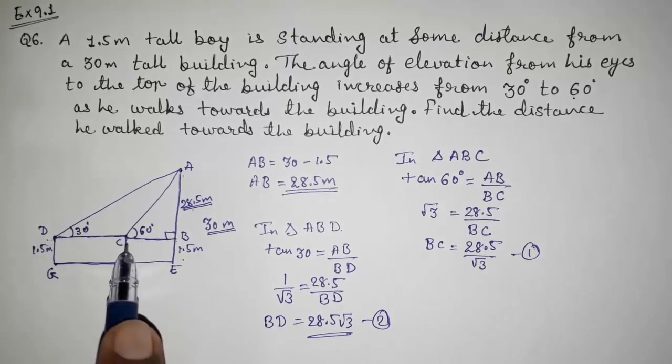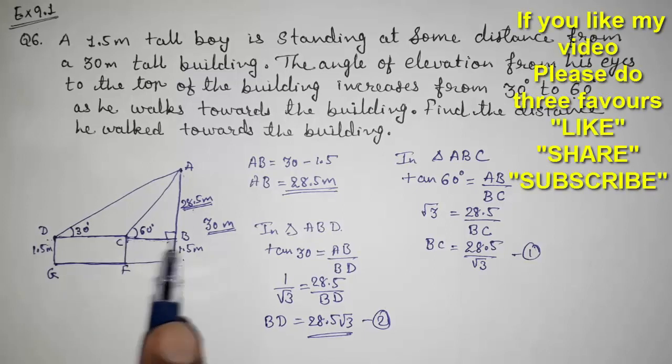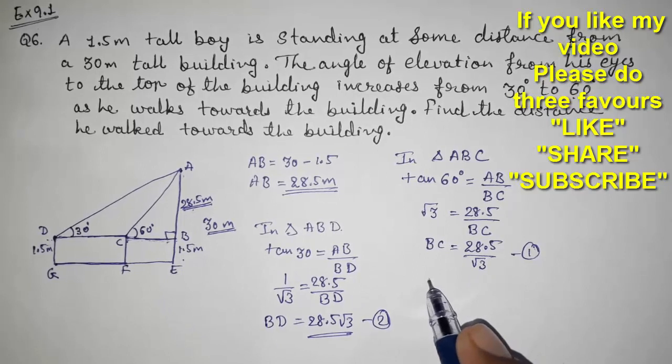Now we got BC, we got BD. Now we are going to subtract BC from BD so that I can get CD. So I am writing here, look.